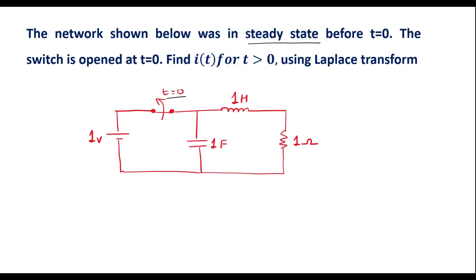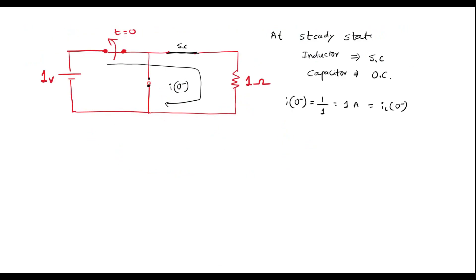Similarly, when the switch was closed and the circuit reached steady state, the capacitor is charged through the 1 volt source. Since the capacitor acts like open circuit at steady state, we can find the voltage across it. The voltage between those two points is Vc of 0 minus, which equals the 1 ohm resistor voltage drop — that is 1 volt. So Vc of 0 minus is equal to 1 volt.